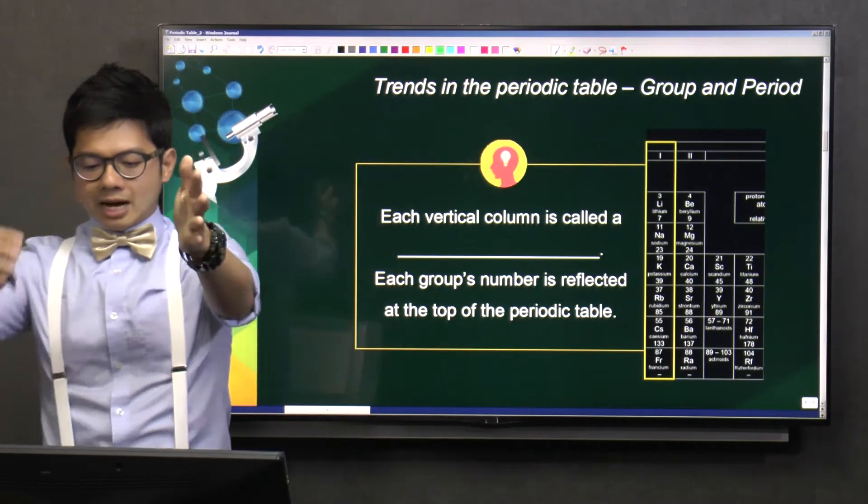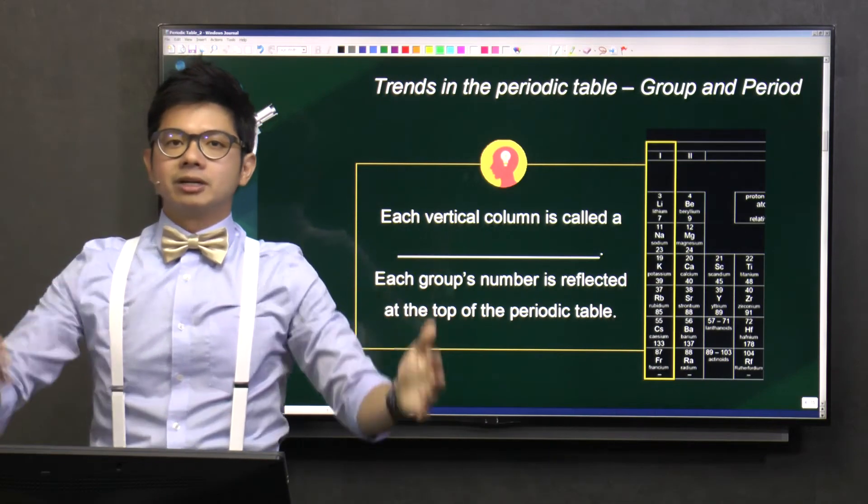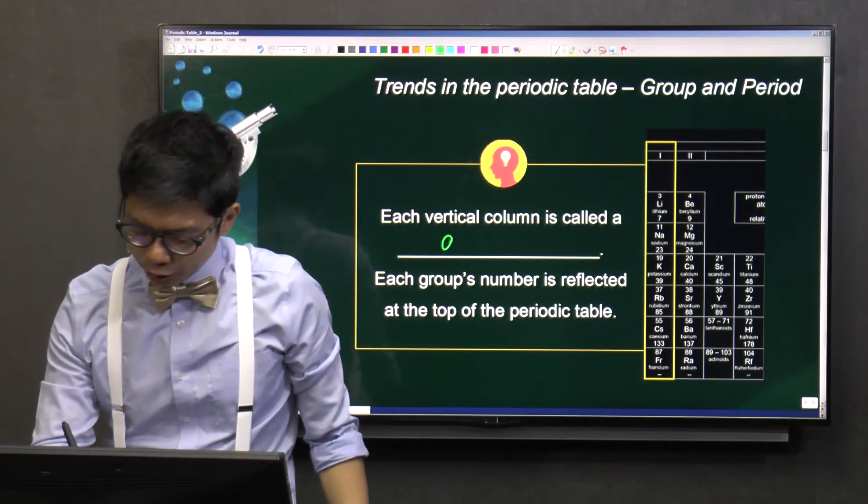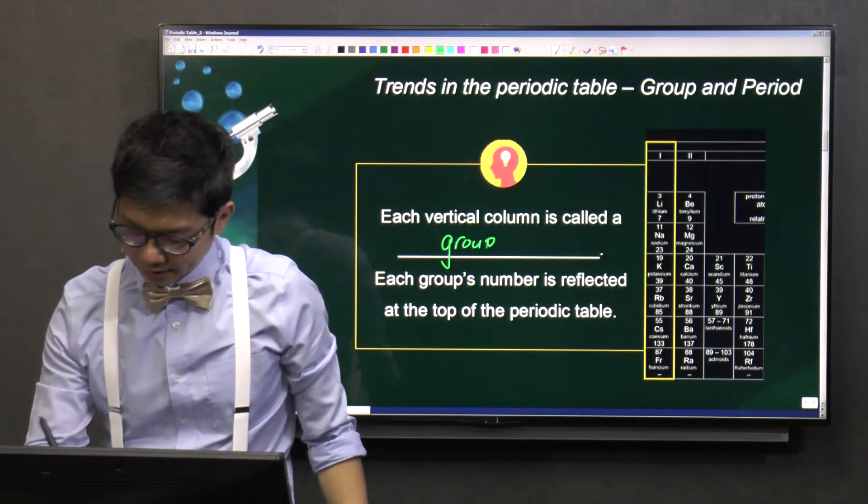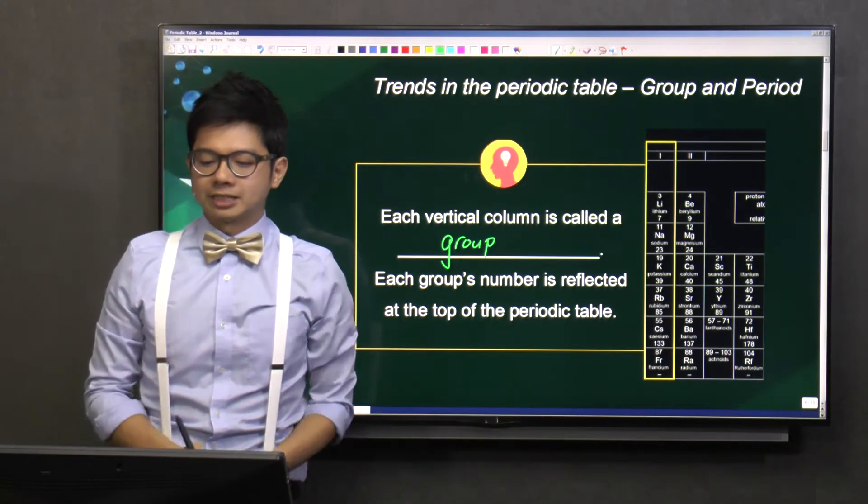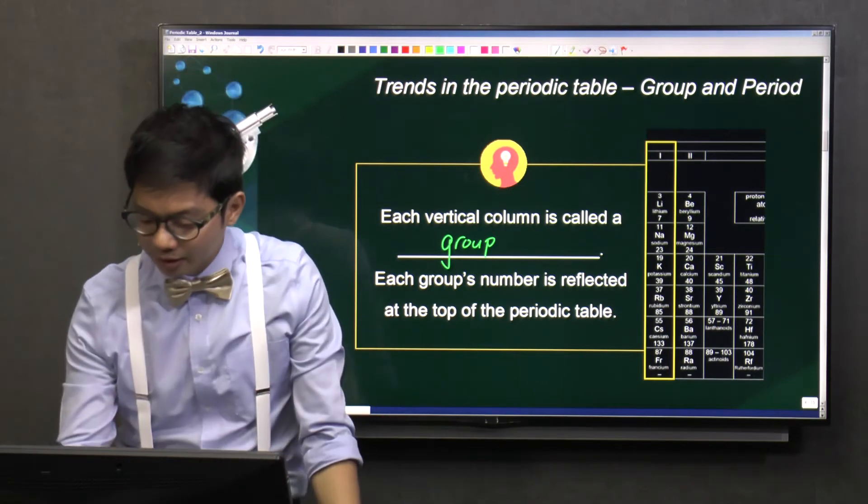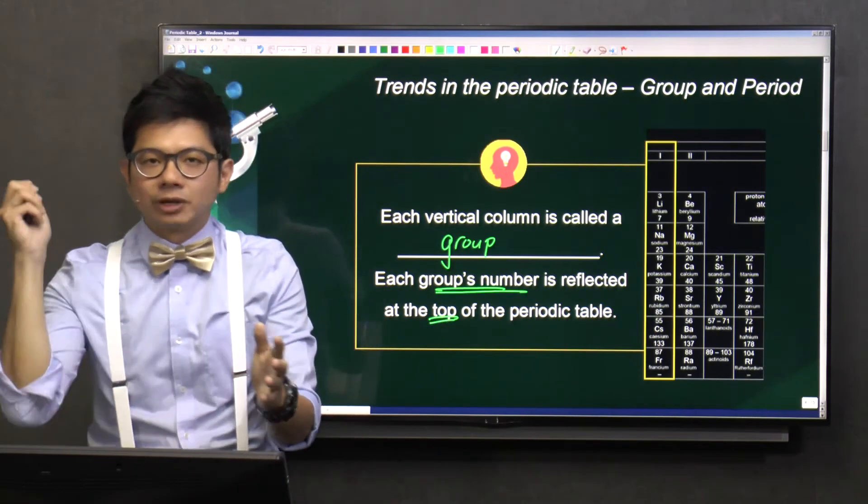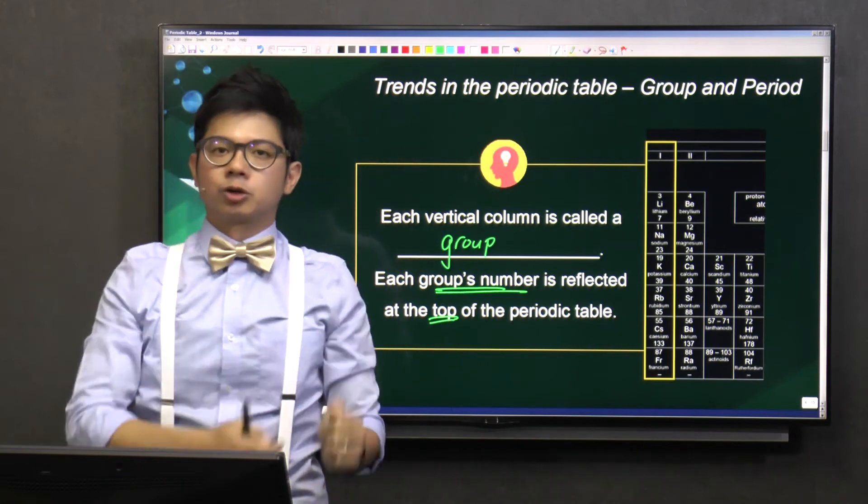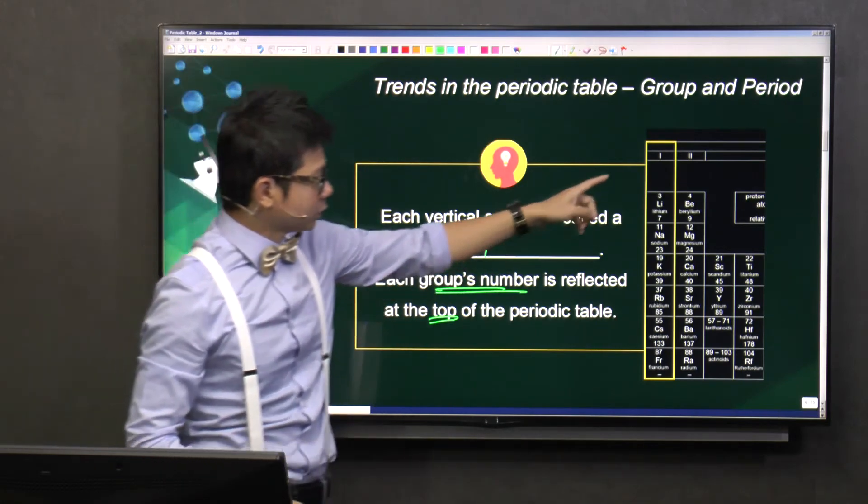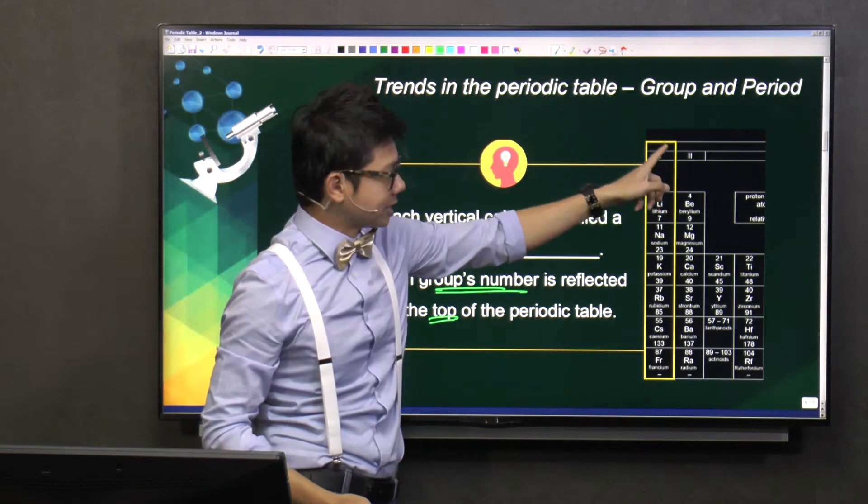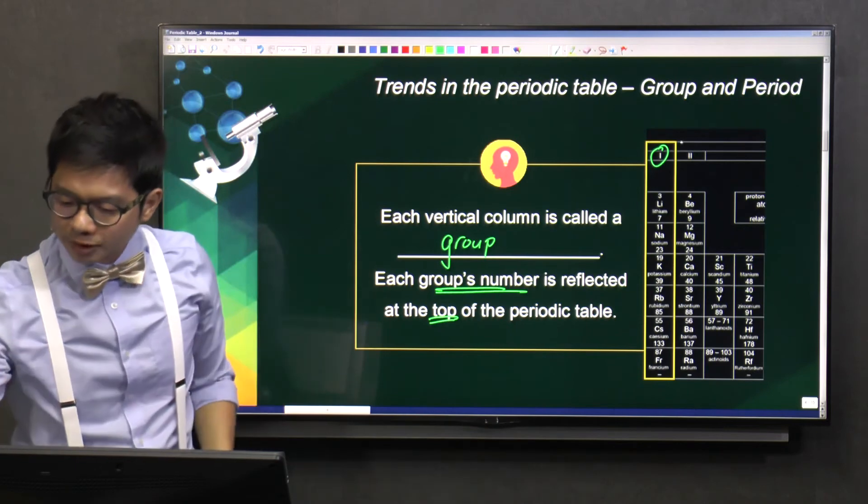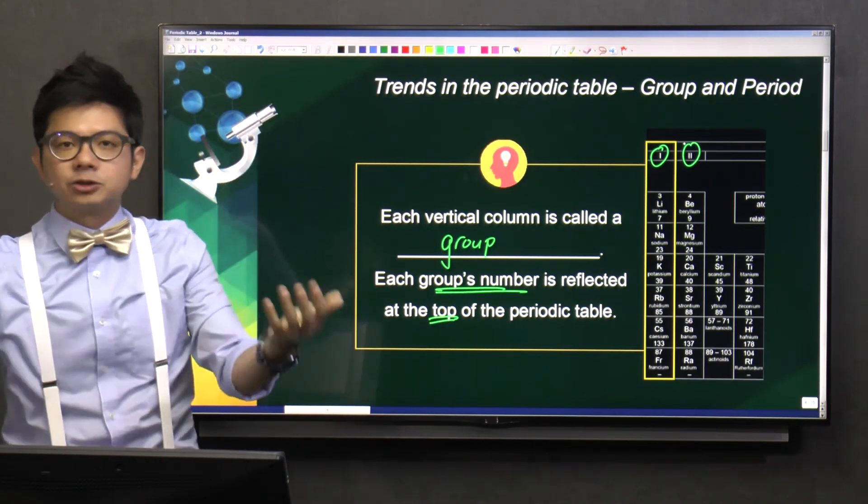We know that there are columns in the periodic table. So each vertical column, we do not call it column. We give it another name in chemistry. We call it group. And each group number is reflected at the top of the periodic table. So every group has a number that is allocated to it. So the first column, we call it group 1. On the periodic table, can you see that on top, there is this Roman representation of 1? So this is called group 1, and then you move to the right, it will be group 2. And you have group 3, 4, 5, and so on.